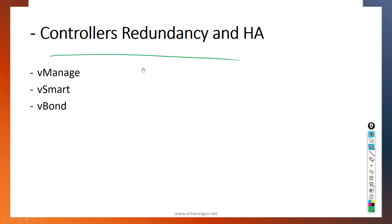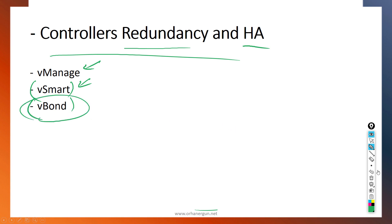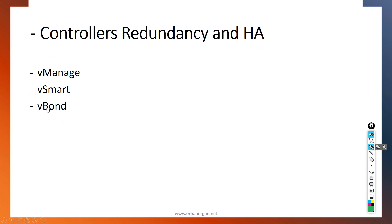Then we will configure and discuss controller redundancy and high availability. This covers how to create the vManage cluster, how to configure redundancy and high availability for vSmart devices, how to group vSmart controllers and assign them to vManage, and how to configure vBond redundancy — which requires an FQDN (fully qualified domain name) rather than just an IP address. All of this will be explained and configured step-by-step.